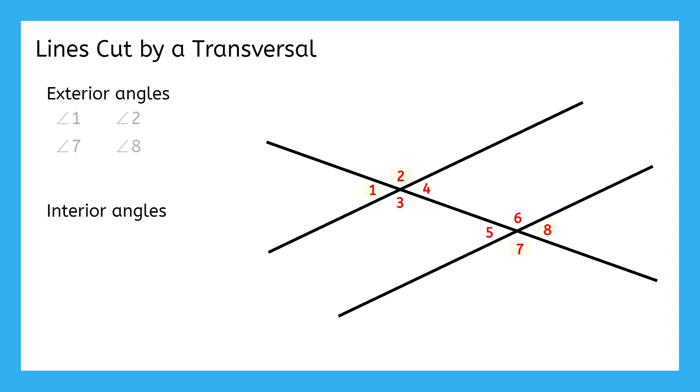These four, one, two, seven, and eight, are our exterior angles. That means that three, four, five, and six would be our interior angles because they are inside the non-transversal lines.